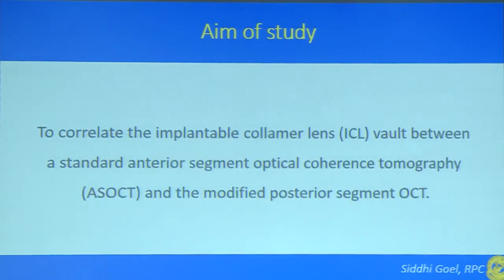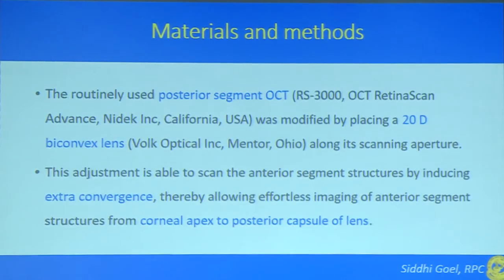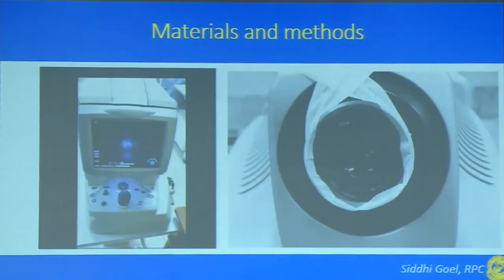The aim of the study was to correlate the ICL vault between a standard anterior segment OCT and the modified posterior segment OCT. The routinely used posterior segment OCT was modified by placing a 20 diopter biconvex lens along its scanning aperture. This adjustment enables scanning of anterior segment structures by inducing extra convergence, allowing imaging from the corneal apex to the posterior capsule of the lens. Here we see the examiner's view of the posterior segment OCT, and this is the scanning aperture where we secured a 20 diopter lens using a micropore.